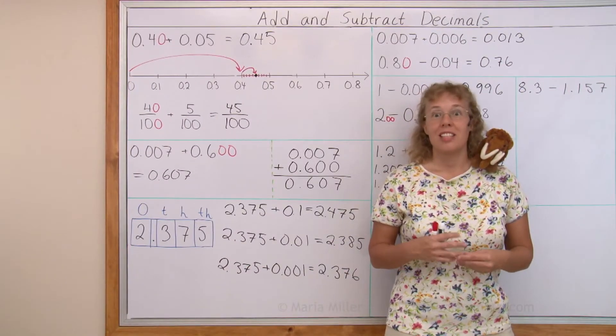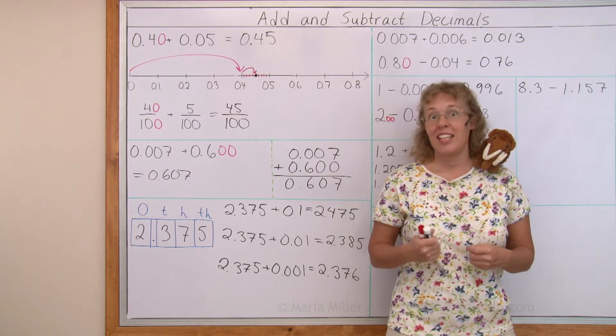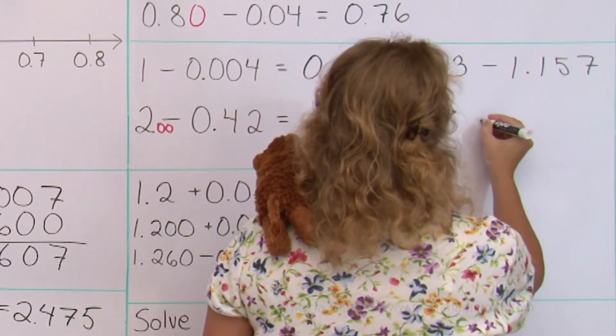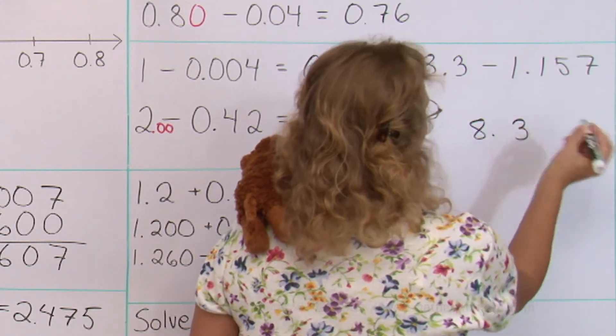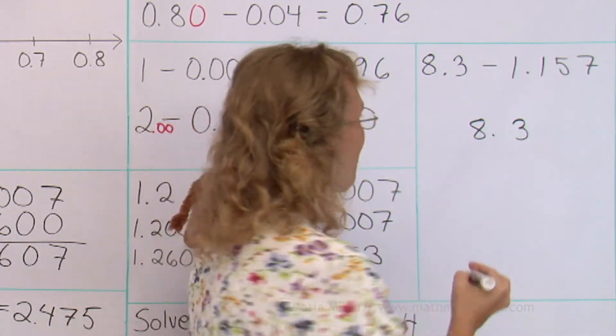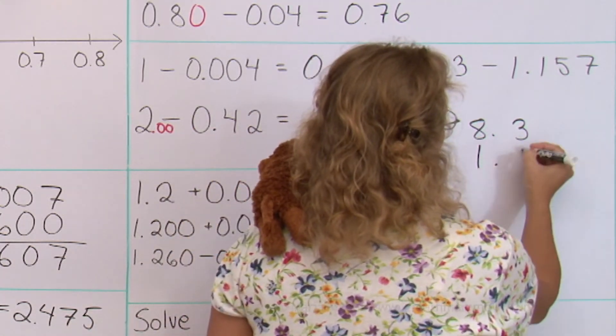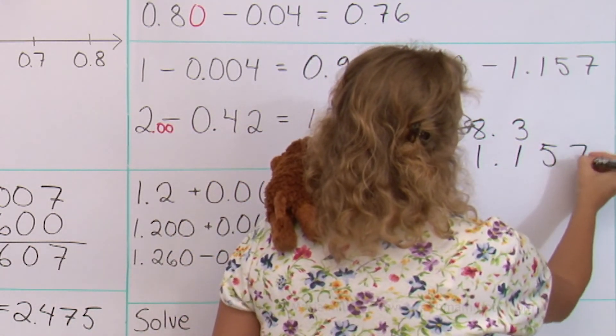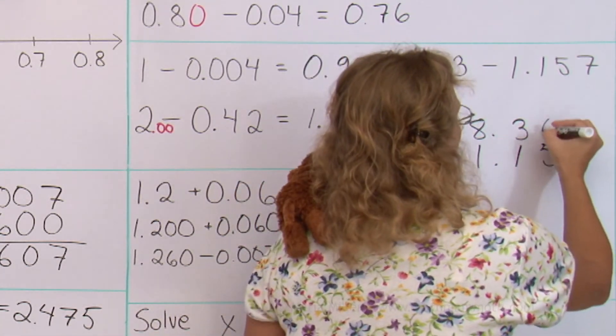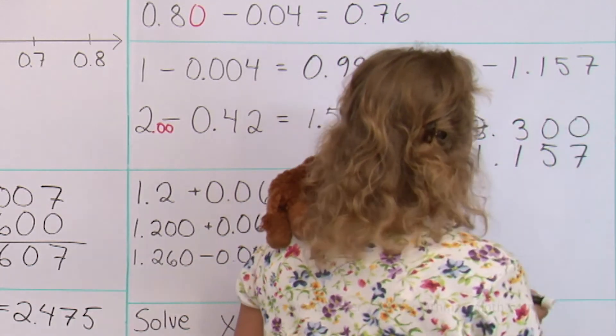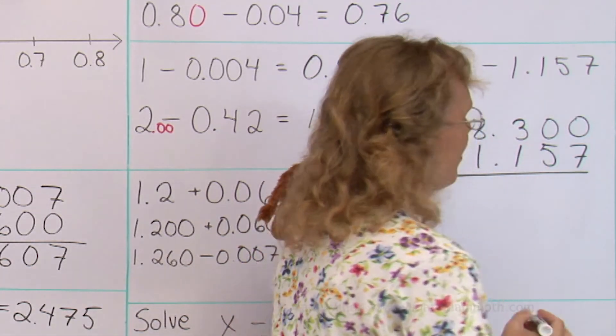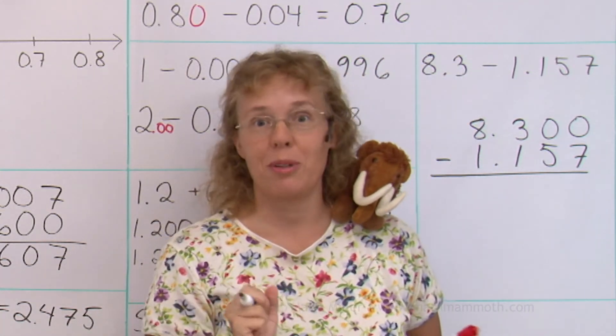In this problem we're going to write the numbers under each other and then subtract. 8.3, and then this one. I need to make sure and be very careful to align my decimal points so that my tenths and ones and all these places get aligned. And now it is good to add these decimal zeros there in the empty places. And now you subtract normally as if there was no decimal point.